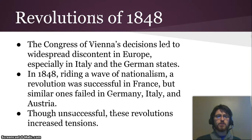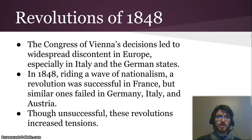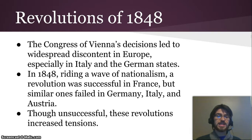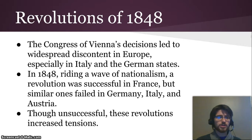The revolutions of 1848 were a unique occurrence in Europe that showed a lot of the nationalist feeling that was bubbling beneath the surface. The Congress of Vienna made a bunch of decisions that were really unpopular and spread discontent in Europe, especially in Italy and the German states, because they did not unify those countries. They made sure they weren't getting too large and too powerful because of their balance of power doctrine.